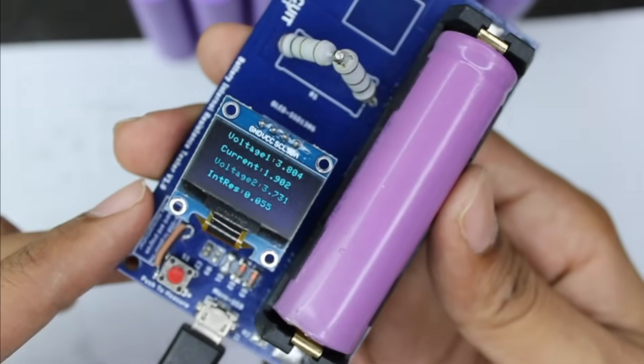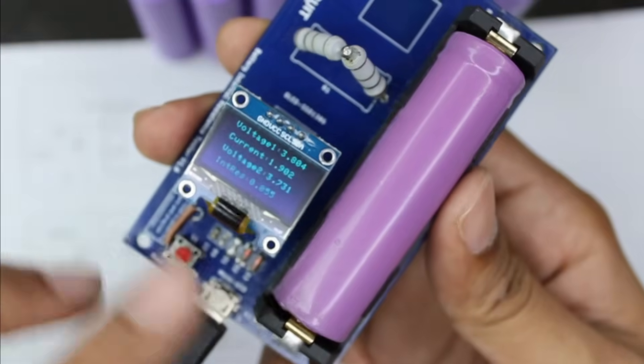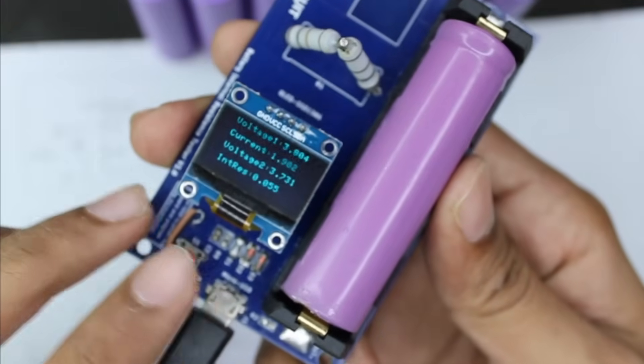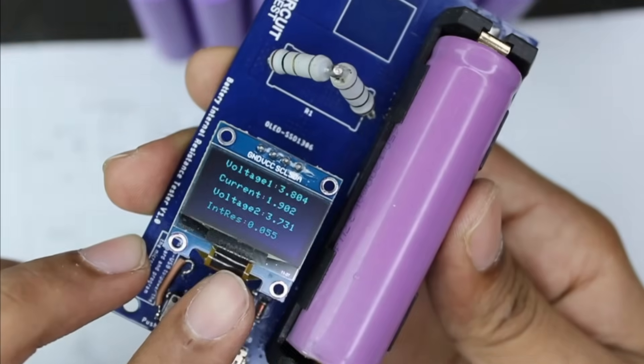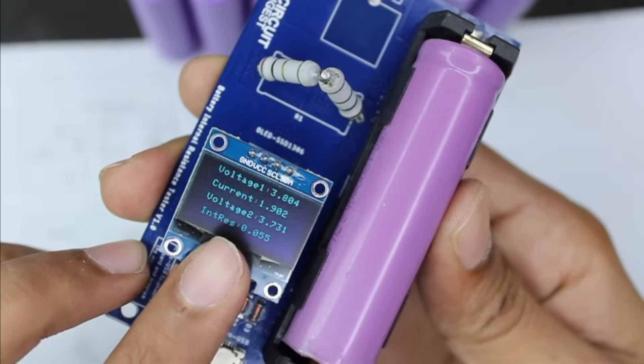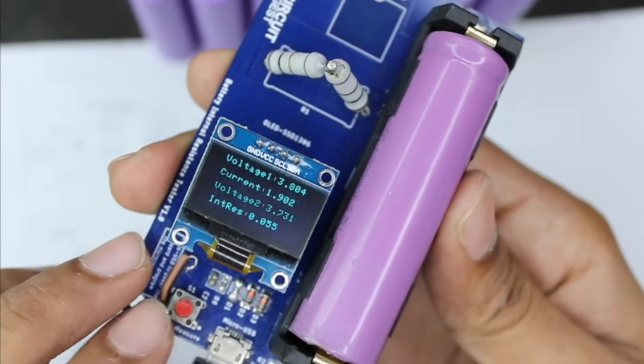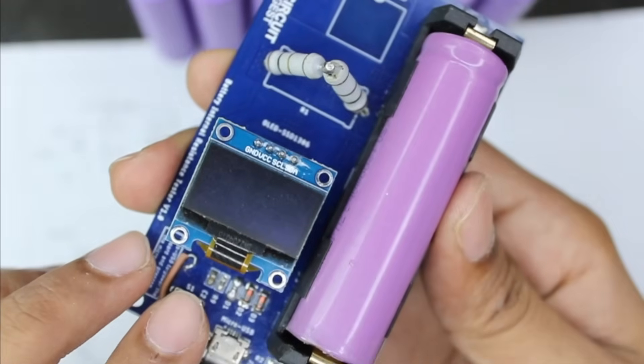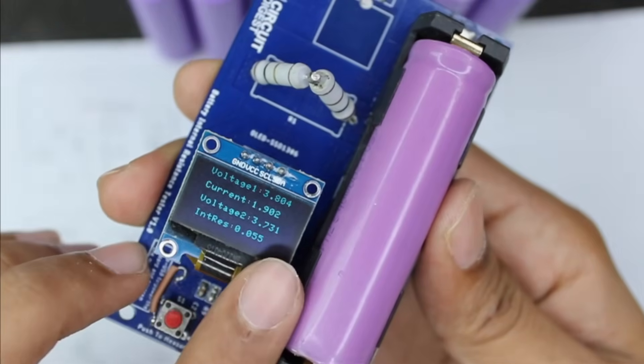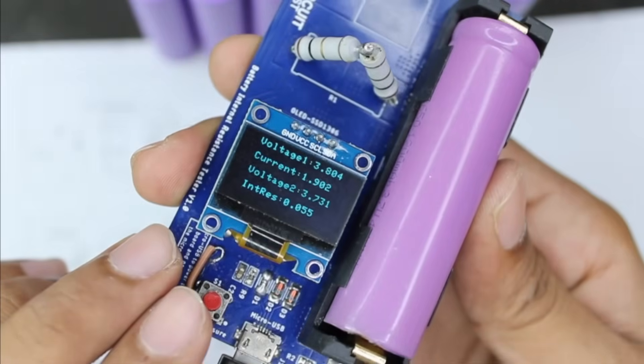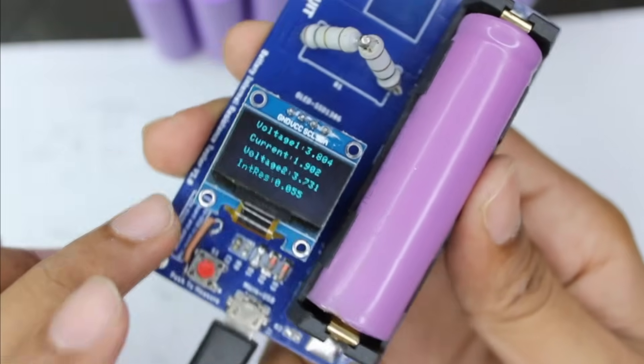Now I've inserted this purple battery and as you can see, the internal resistance calculated for this cell is around 0.055 ohms. If I press the reset button again, it calculates again and the result is almost exactly the same at 0.055.